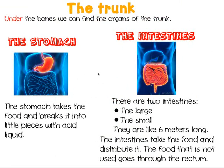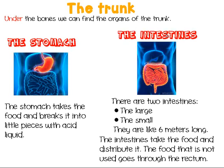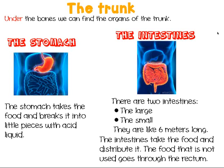Under the skin, the muscles, and the bones we find more organs, like the stomach. The liver is very big — the stomach is smaller — but it has a very important job too. It takes the food and breaks it into little pieces with liquid acids, so the food can go through the intestines. The intestines take the food and distribute it all around the body so we have energy. There are two types of intestines: the large one and the small one — the small one is very long.